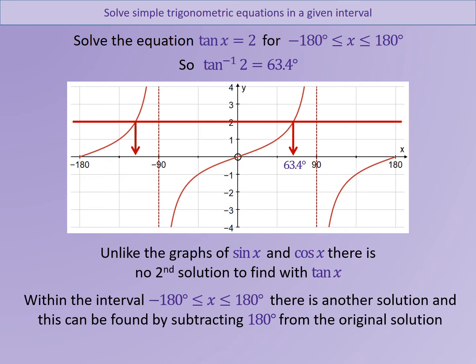Drawing a line across from the value two shows where the second solution will be. The tan graph is less complicated than sine and cosine because the tan graph repeats itself every 180 degrees, so to find any other solutions in range we simply add or subtract 180 degrees from the principal value. The answer is found by taking 180 from 63.4, giving minus 116.6 degrees as the second solution.